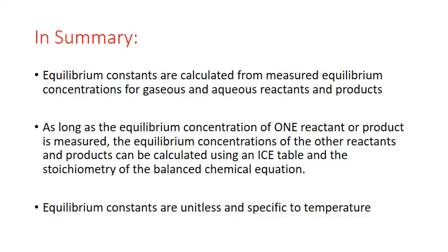In summary, equilibrium constants are calculated from measured equilibrium concentrations for gaseous and aqueous reactants and products in a reaction. As long as the equilibrium concentration of one reactant or product is measured, the equilibrium concentrations of the others can be calculated using an ICE table and the stoichiometry of the balanced chemical equation. Equilibrium constants are unitless and specific to temperature.